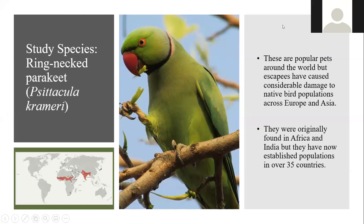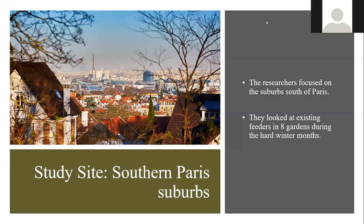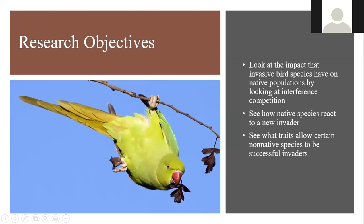This study was near Paris in France, where they looked at several suburbs south of the city and examined eight existing gardens from November to February. These are the research objectives. They wanted to see the impact that invasive bird species like the ring-necked parakeet have on native bird relations by looking at interference competition. They also wanted to see how native species would react to the new invaders and how they would deal with the competition of an introduced species. And they wanted to see what allowed these invaders to become so successful. As you can see, he's hanging upside down - he's very innovative.